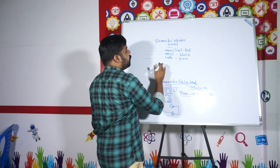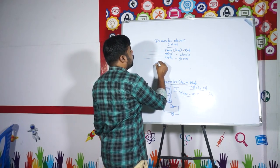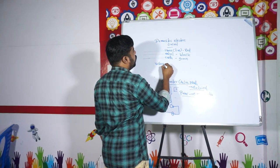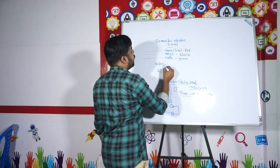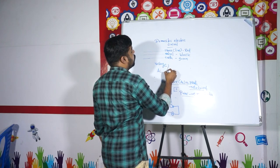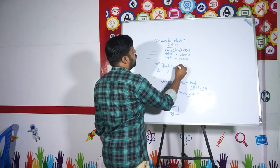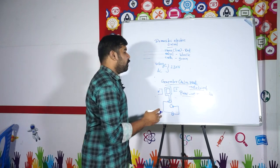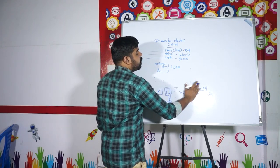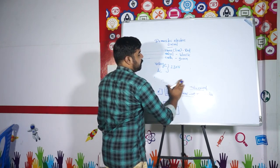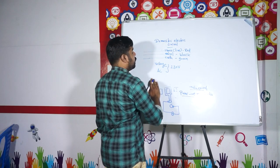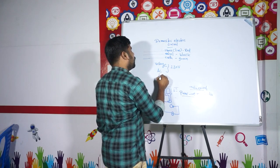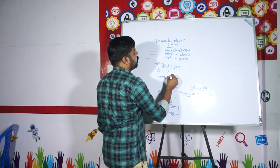The AC connection in the domestic circuit is 230 volts. We will also discuss the frequency and the three-pin plug used in the connection.